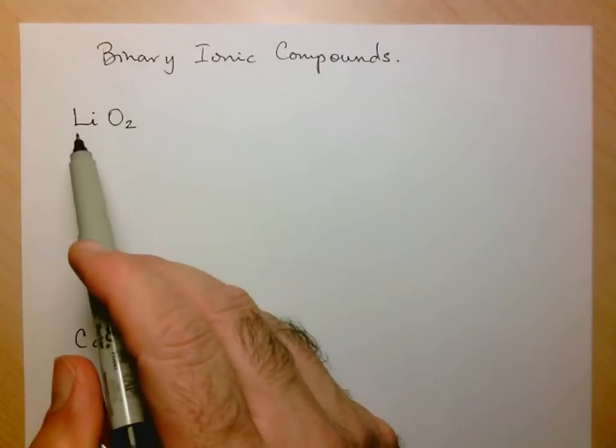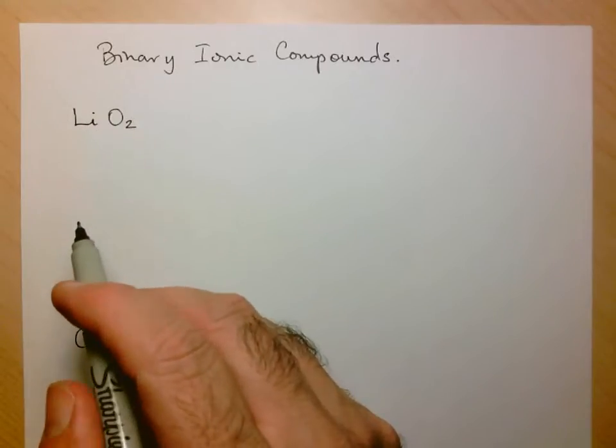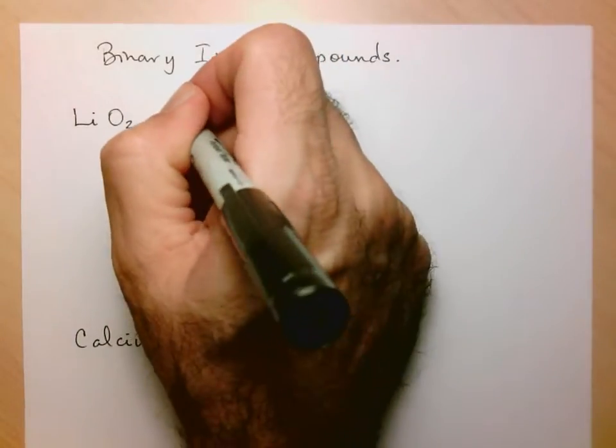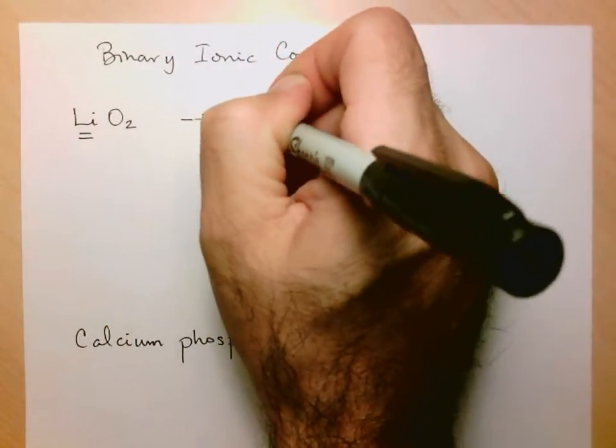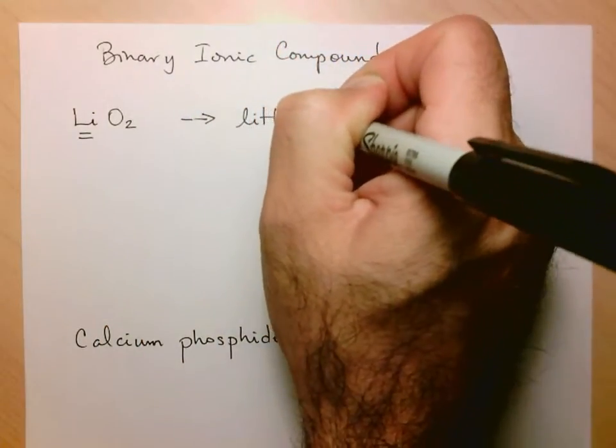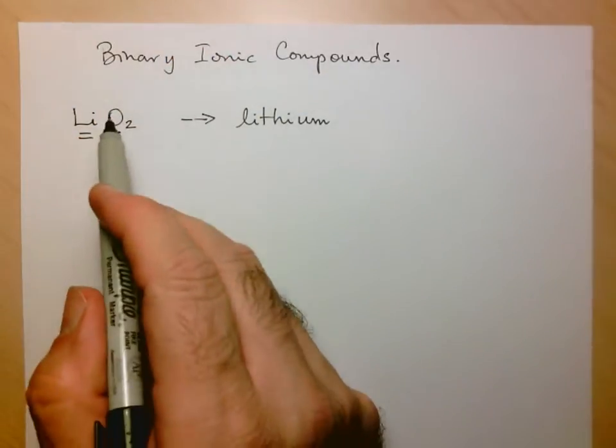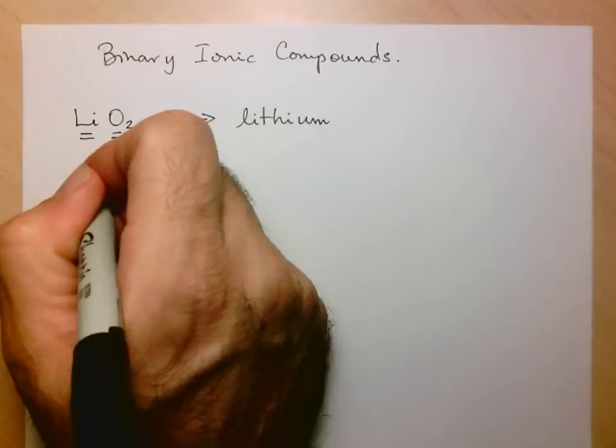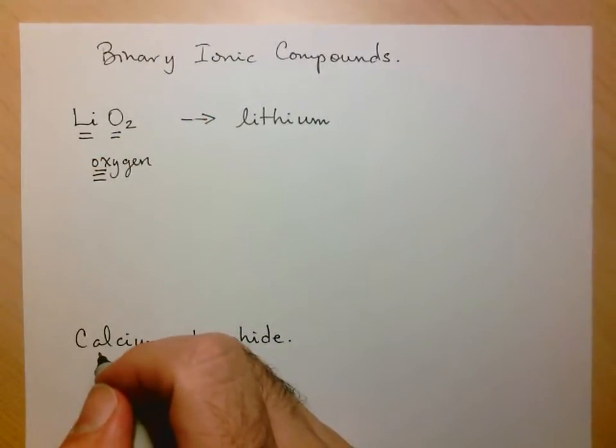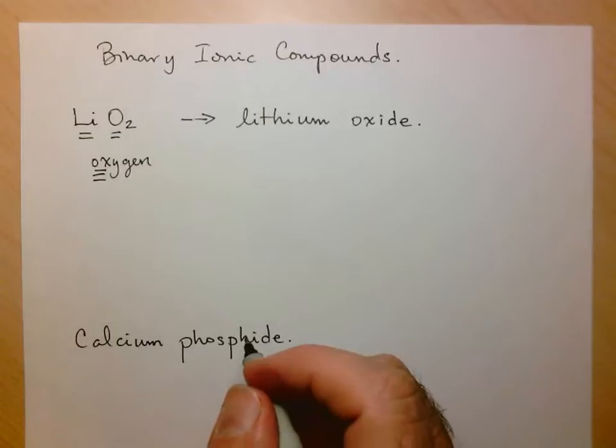The way we name these: we start with the chemical formula and name it. Pretty simple here - you look at the cation, which is lithium, and keep its name as is. Then look at the non-metal anion and take its root word. Here we have oxygen, and the root word is O-X, and you add the suffix I-D-E. So, lithium oxide, and that's it.